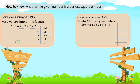Let's take another example. Let's consider the number 9075. We do the prime factorization of this number. 9075 is divided by 3 to get 3025. 3025 is divisible by 5; dividing gives 605. 605 is also divisible by 5, giving 121.